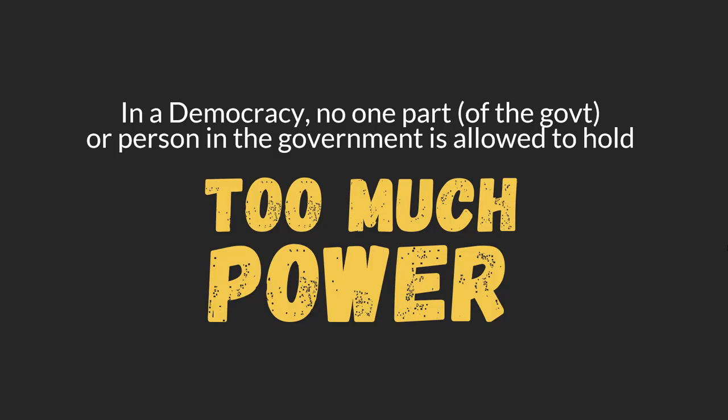In a democracy, no one part of government or person in the government is allowed to hold too much power. That's why we keep each other in check. Otherwise, it will be no different from a monarchy, where we have a king whose rule is absolute — if he decides that you should die, you will die.